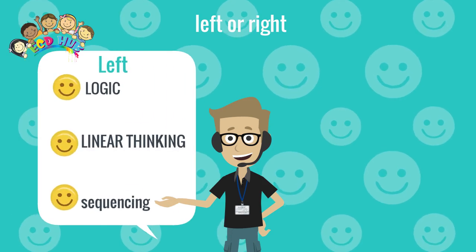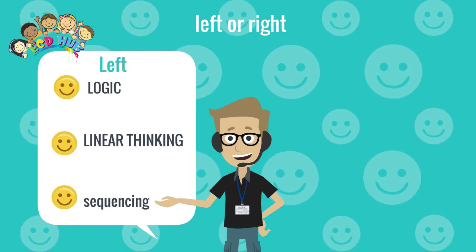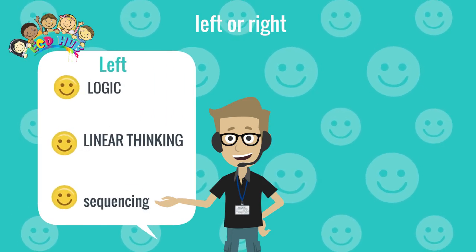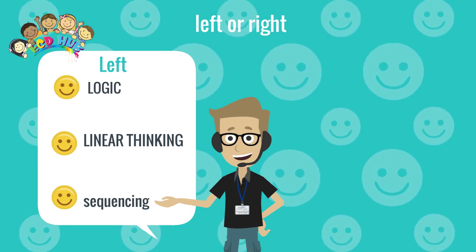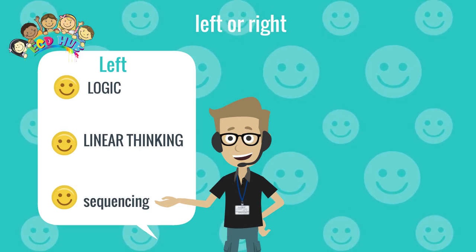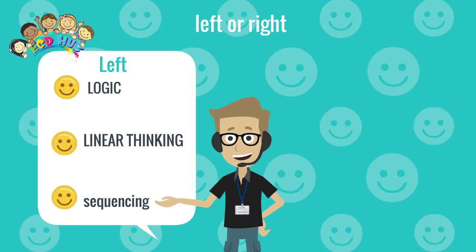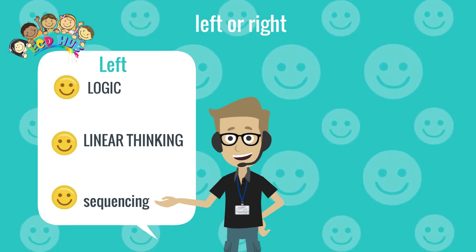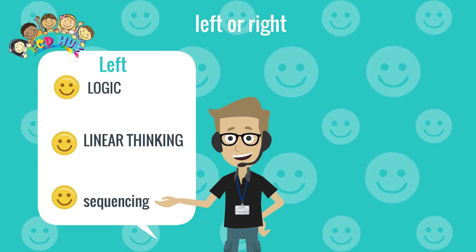The left brain is more verbal, analytical, and orderly than the right brain. It's sometimes called the digital brain. It's better at things like reading, writing, and computations. The left brain is also connected to logic, sequencing, linear thinking, mathematics, facts, thinking, and words.